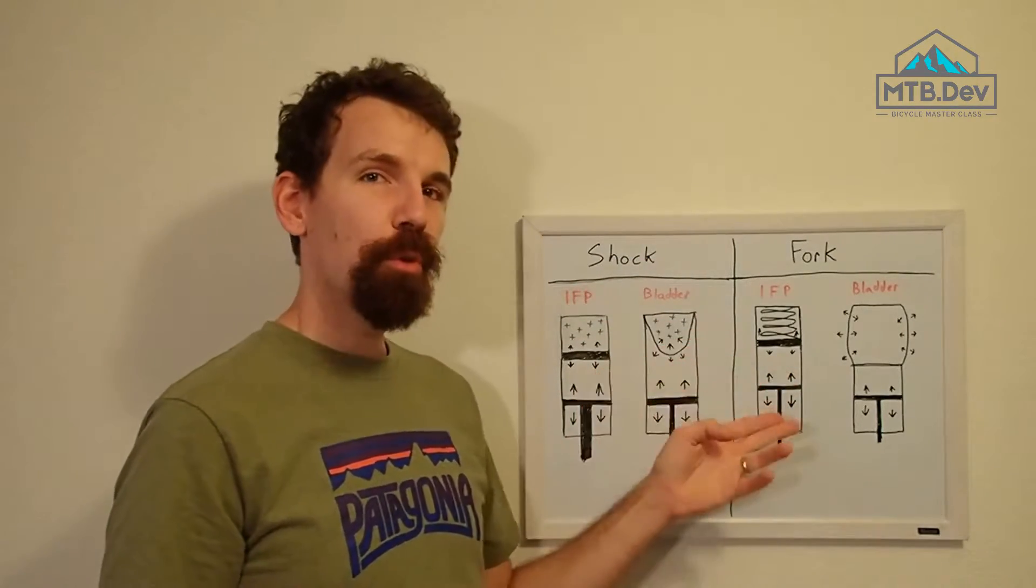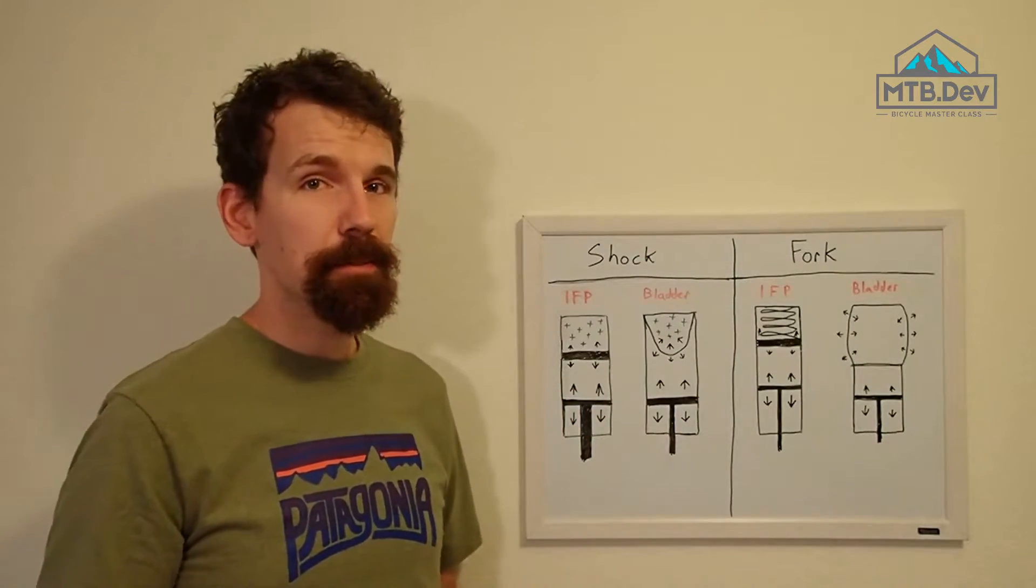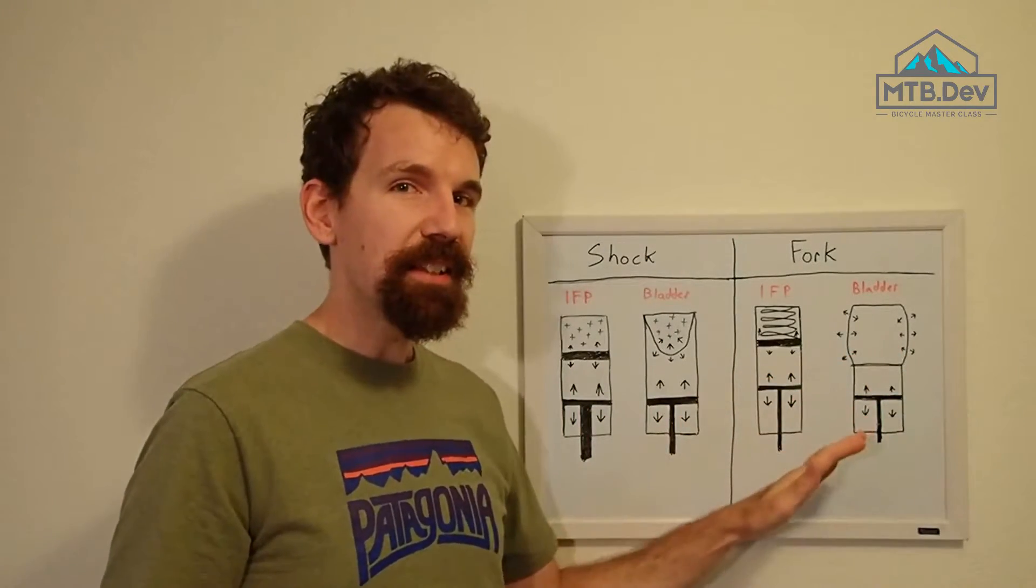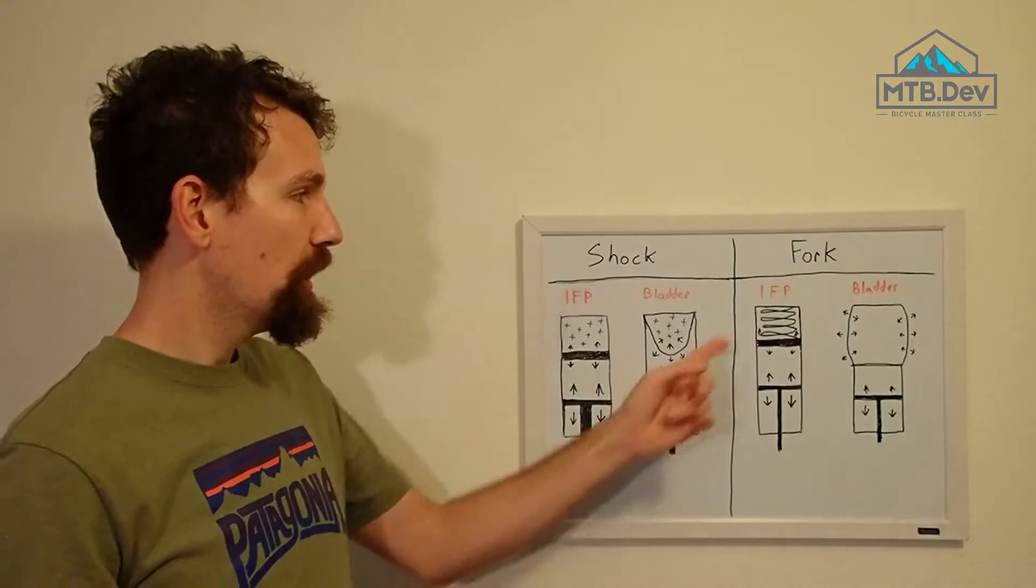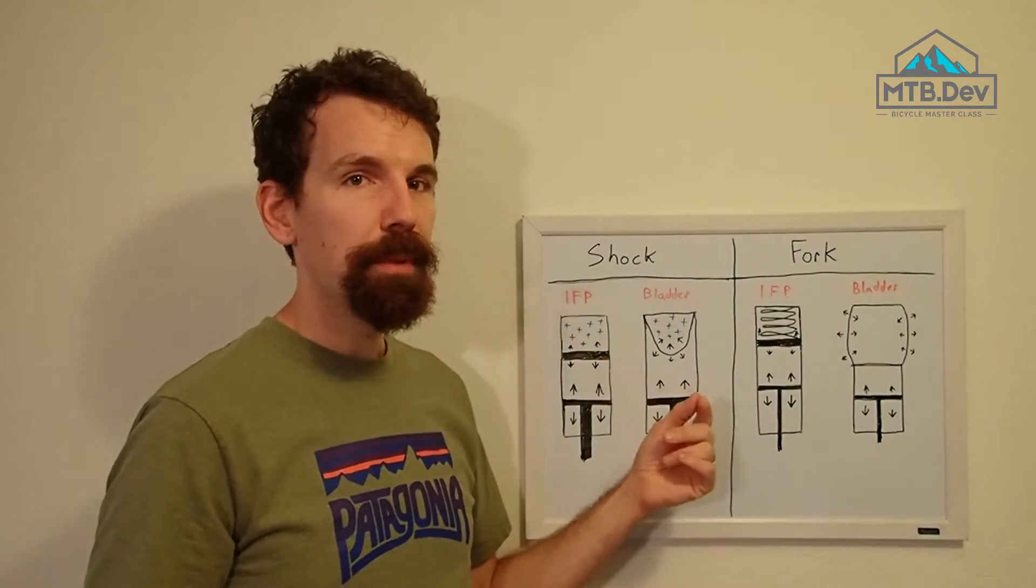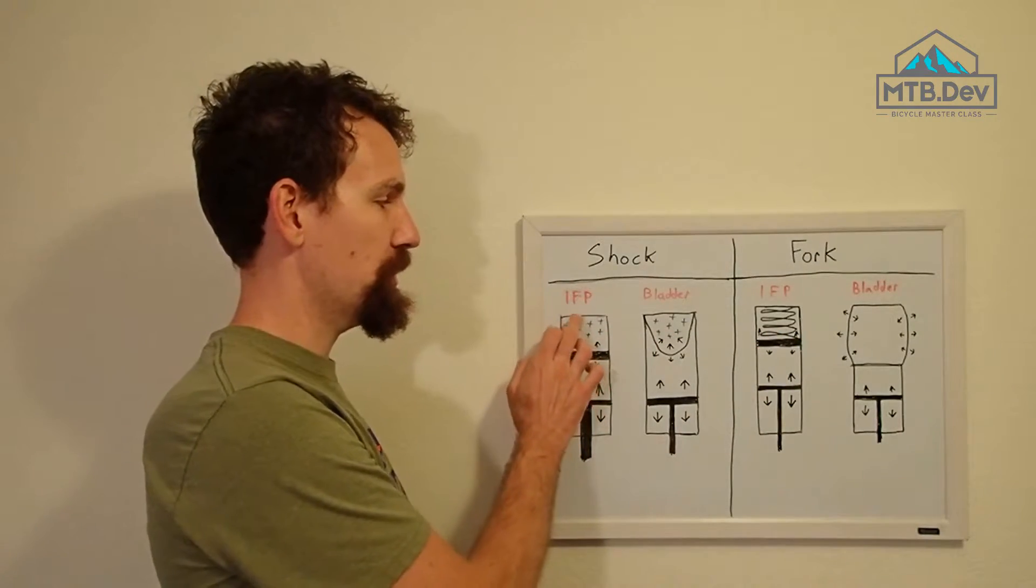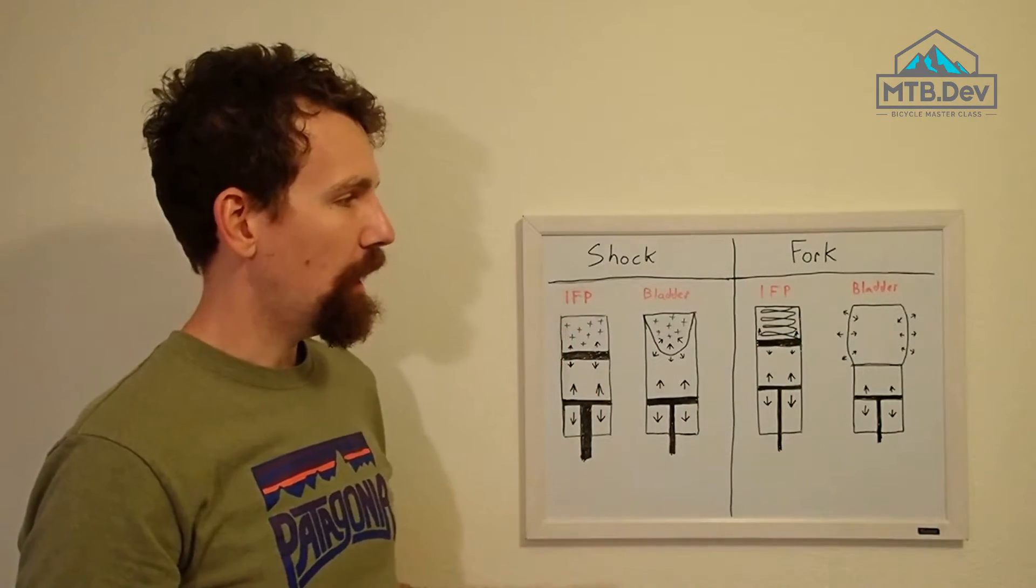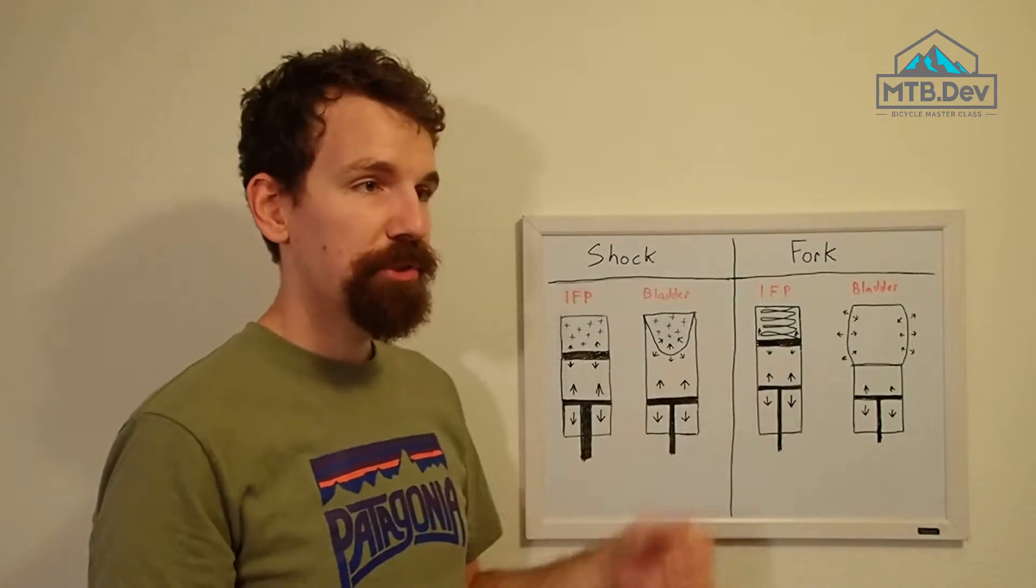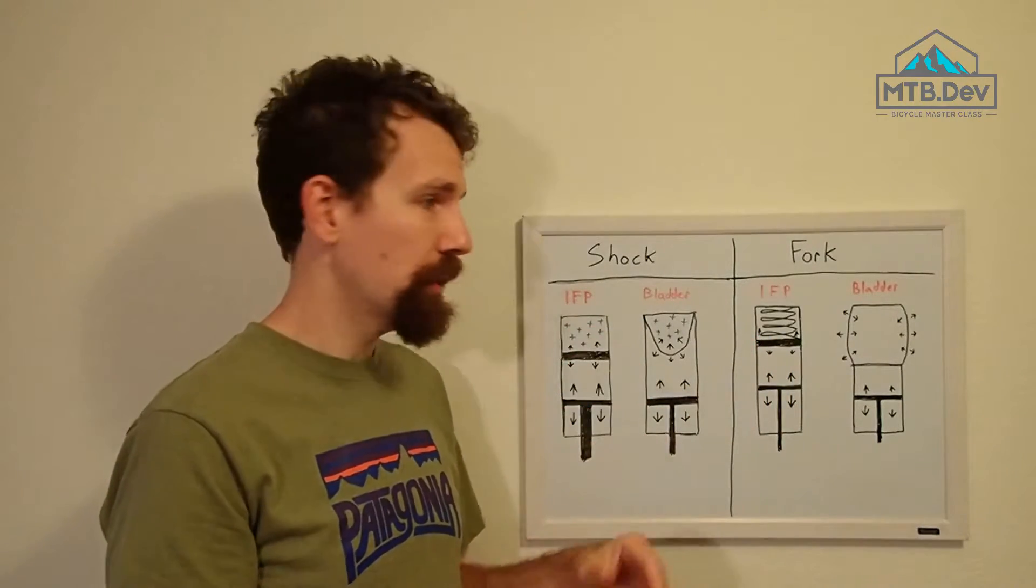Now moving on to a fork, we're going to have the same two basic systems, but they're going to be slightly different in how they're executed. The IFP can be backed by a coil spring instead of a high-pressure gas charge, and that's going to reduce the compression ratio.